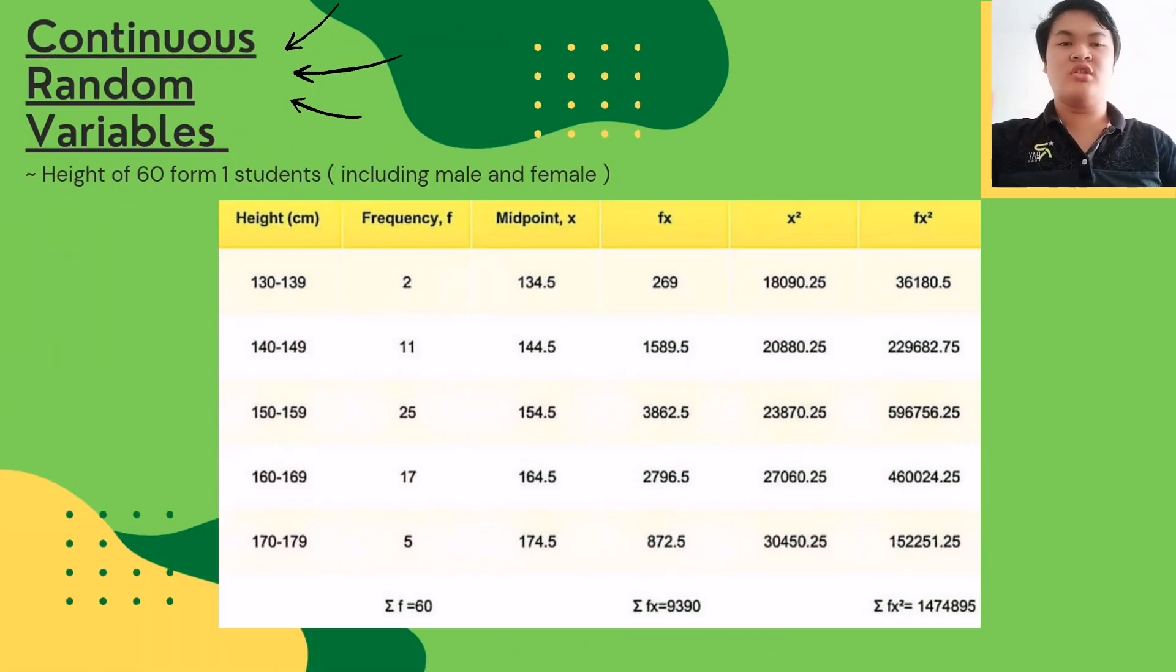For the continuous variable distribution, we collected data from 60 Form 1 students, including male and female, measuring their height. The highest frequency was students with heights ranging from 150 to 159 cm. The lowest frequency was two students with heights from 130 to 139 cm.